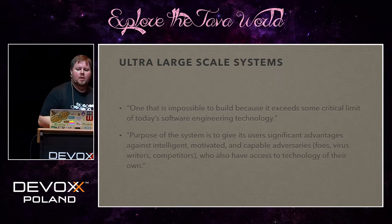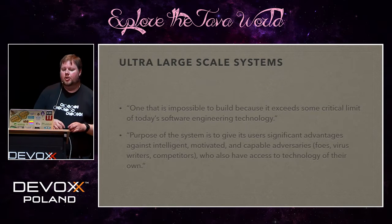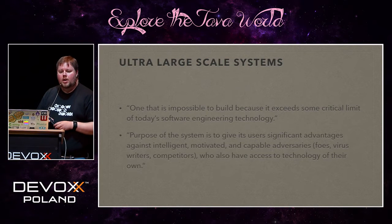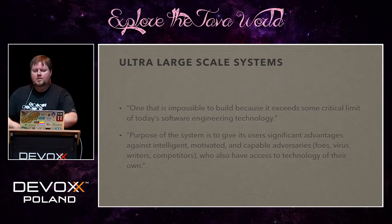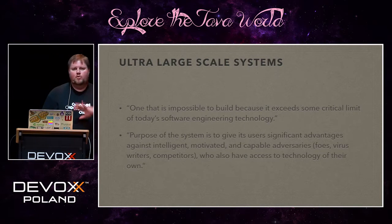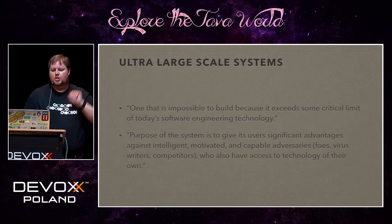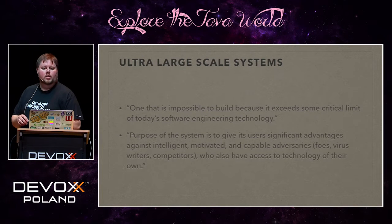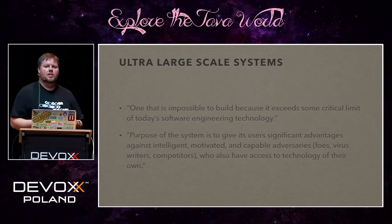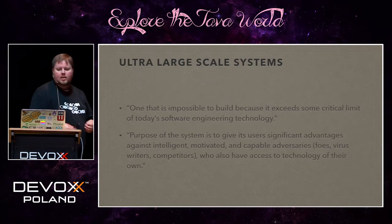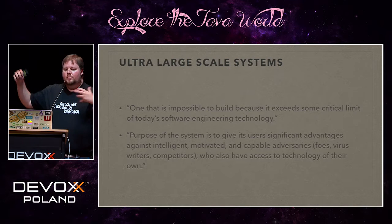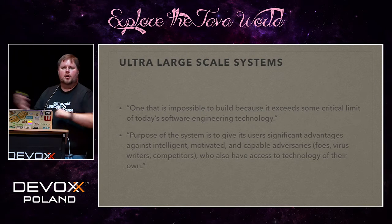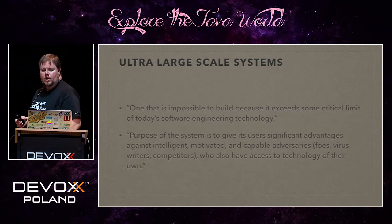Starting with ultra-large-scale systems — how do you define that? One definition is a system that's impossible to build because it exceeds some critical limit of today's software engineering technology, but that's a self-defeating definition. The second definition focuses on purpose: give users significant advantages against intelligent, motivated, and capable adversaries — foes, virus riders, competitors. Our adversaries also have access to technology of their own. This starts to sound like what we're experiencing in the software industry right now.